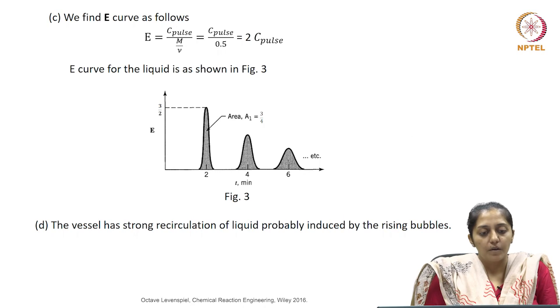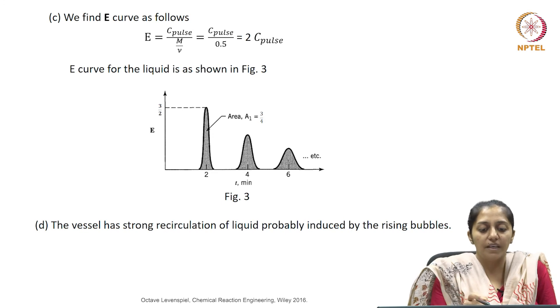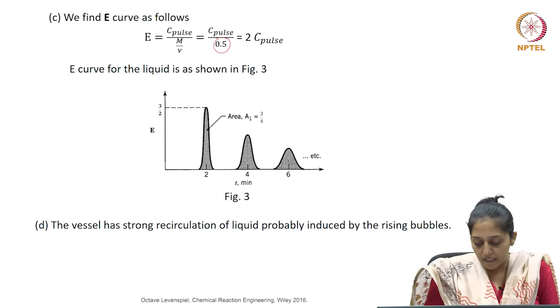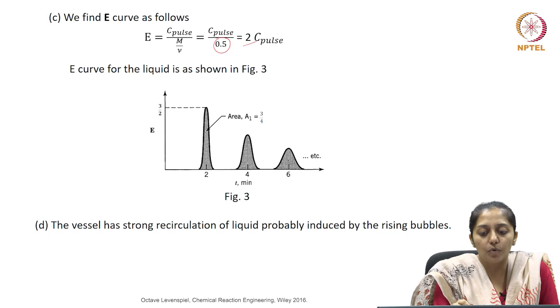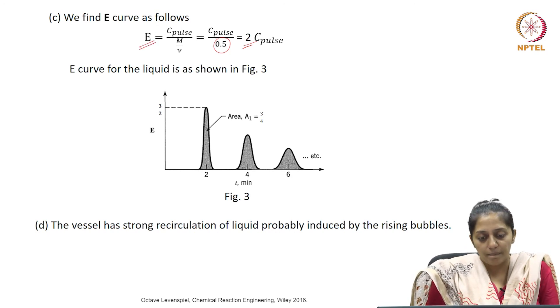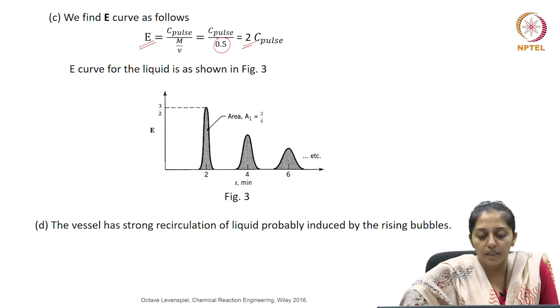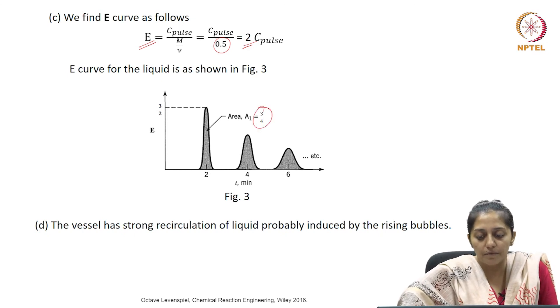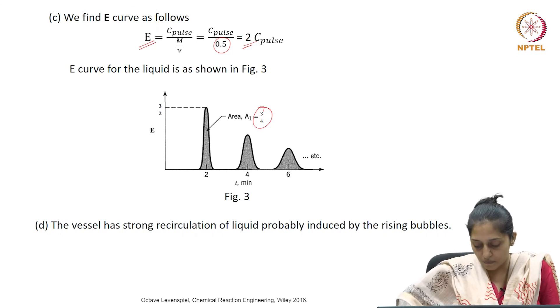The third part of the problem is to find the E curve. We know that C pulse curve can be converted to E curve by dividing the C values by the total area under the C pulse curve. Area under the curve we know is 0.5. So the entire curve can be made 2 folds - the corresponding C values can be converted 2 folds to give the corresponding E values. This is what has been done here. The area for the first plot will become 3 by 4 twice and so on for the rest of these spikes.